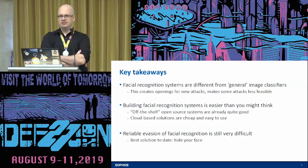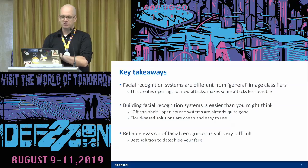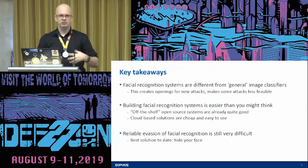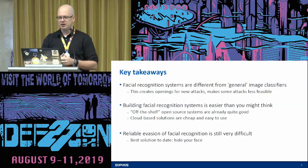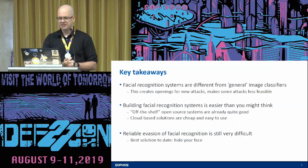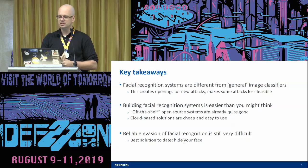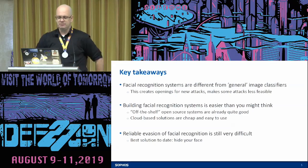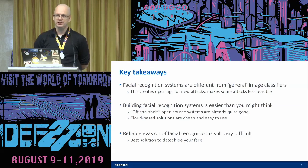Three things to remember if you nod off. First: facial recognition systems are different from general image classifiers — they're solving different problems, the pipeline is different, the models are structured differently, and you have different attack opportunities. Some existing attacks that work well against image classifiers are not as feasible here. Second: building facial recognition systems is really easy — there are off-the-shelf open-source systems and cloud-based solutions like Amazon's that are extremely cheap and easy to use. Third: reliable evasion of facial recognition, particularly in the wild, is still really difficult. A mask is the best solution I've been able to come up with.